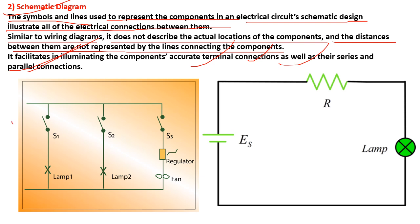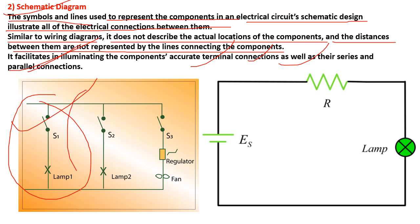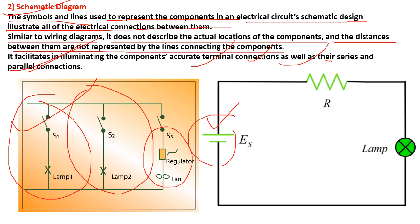Here we see the schematic diagram of a lamp. The symbols used include regulators, fan, and other components shown by their electrical or conventional symbols. This includes the battery symbol, resistance symbol, and the lamp symbol. These make up the second type of electrical drawing — the schematic diagram.